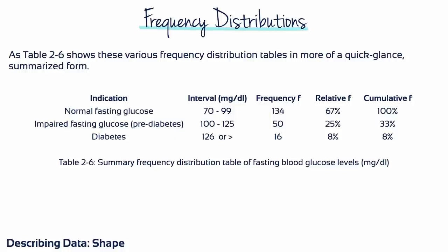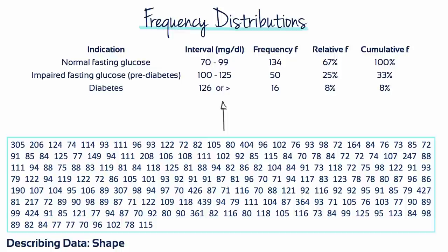Table 2.6 shows frequency, relative and cumulative distribution tables in a more quick glance summarized form. The patterns present in the Table 2.1 student clinic data are more readily comprehended and communicated to the supervising physician or nurse when they are organized using descriptive statistics into the form of Table 2.6.